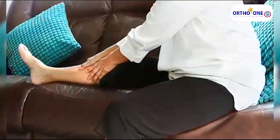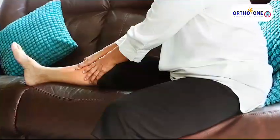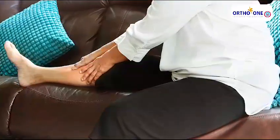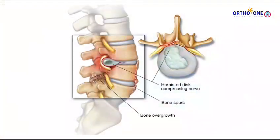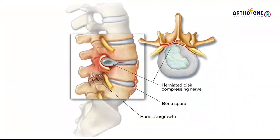Say if they walk about 100 meters, they get calf pain or heaviness in the leg. Then they have to sit for a while, and once they sit, the pain gets relieved a bit and they are able to walk again. This is called lumbar canal stenosis.